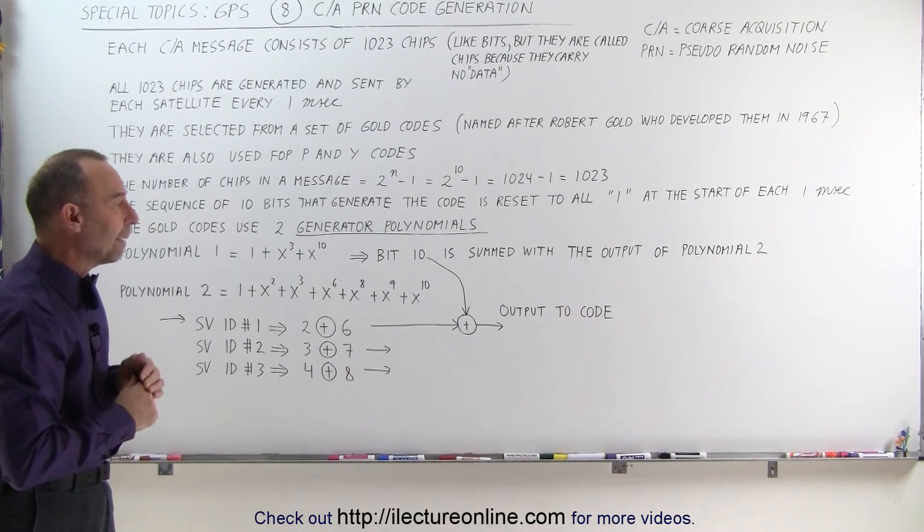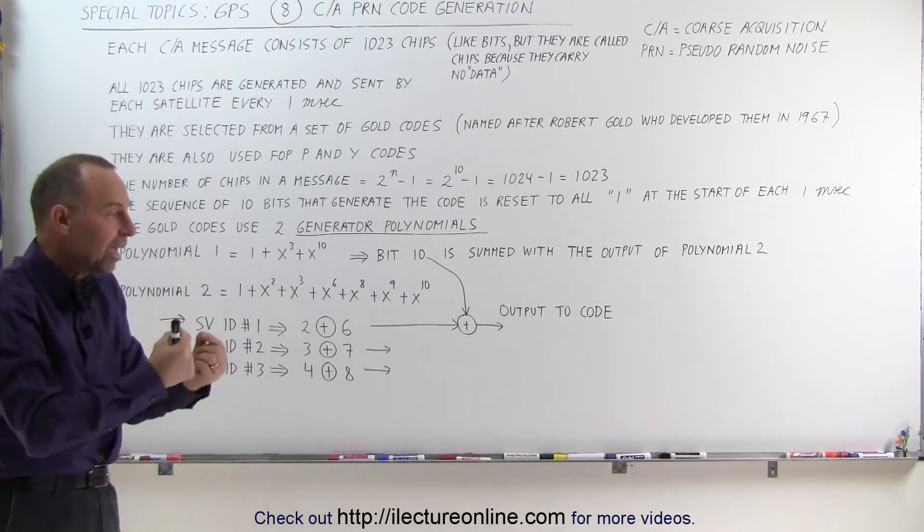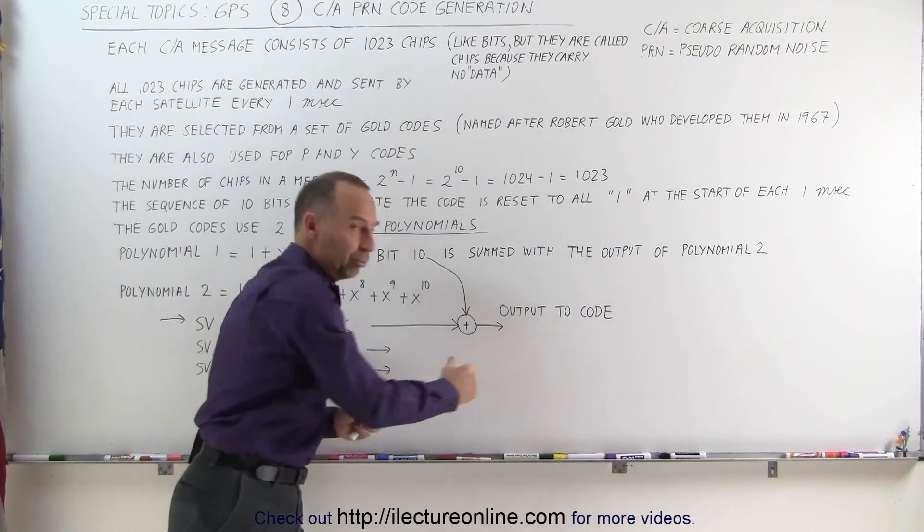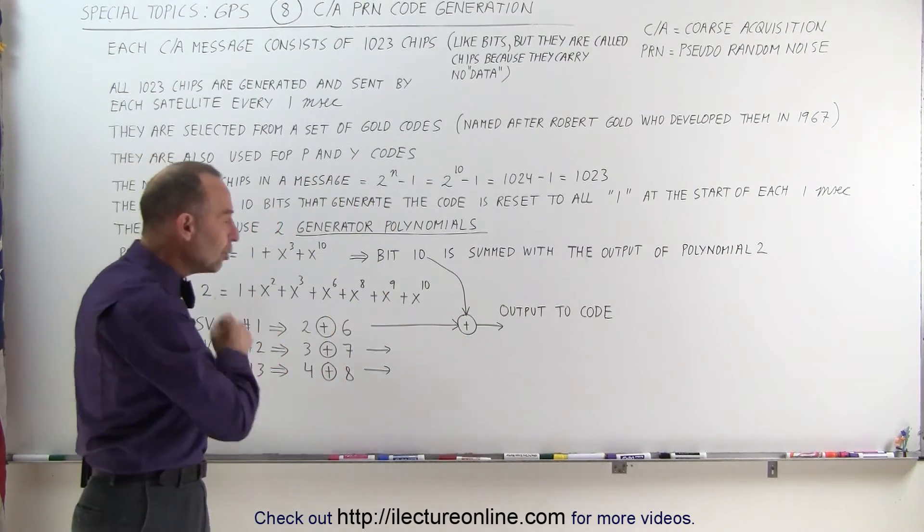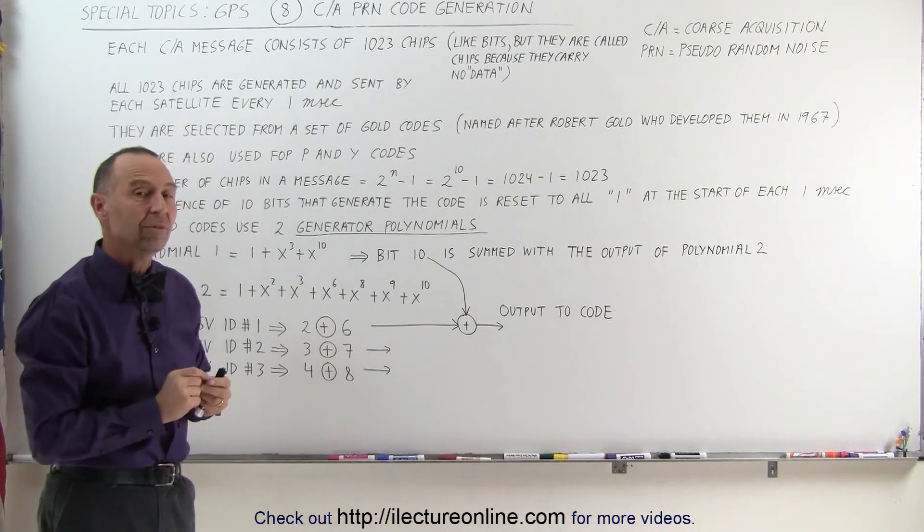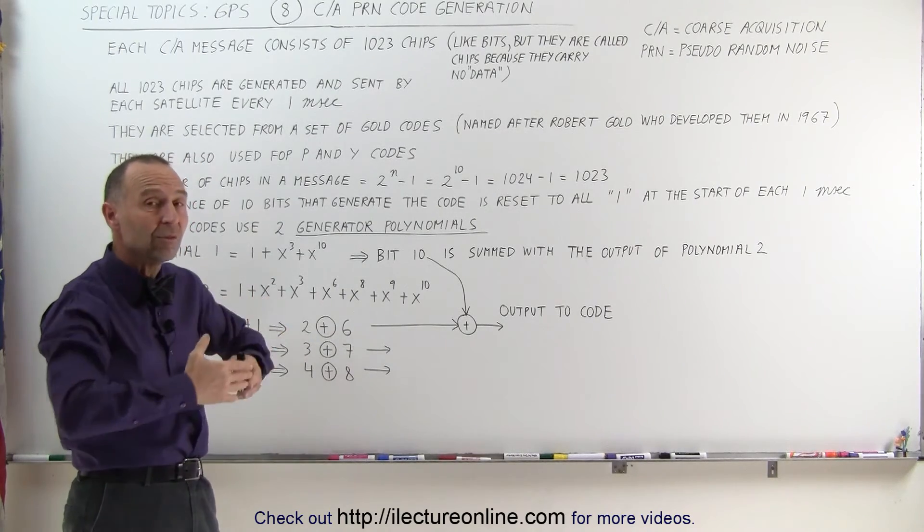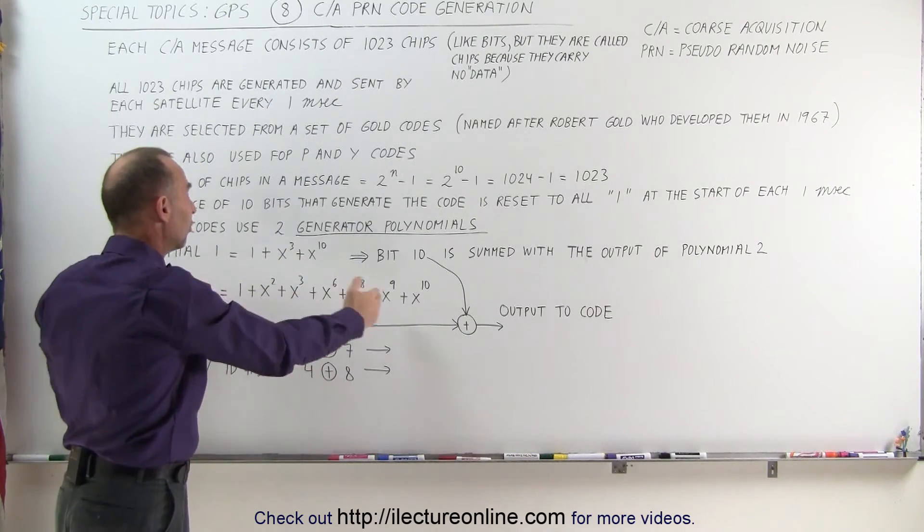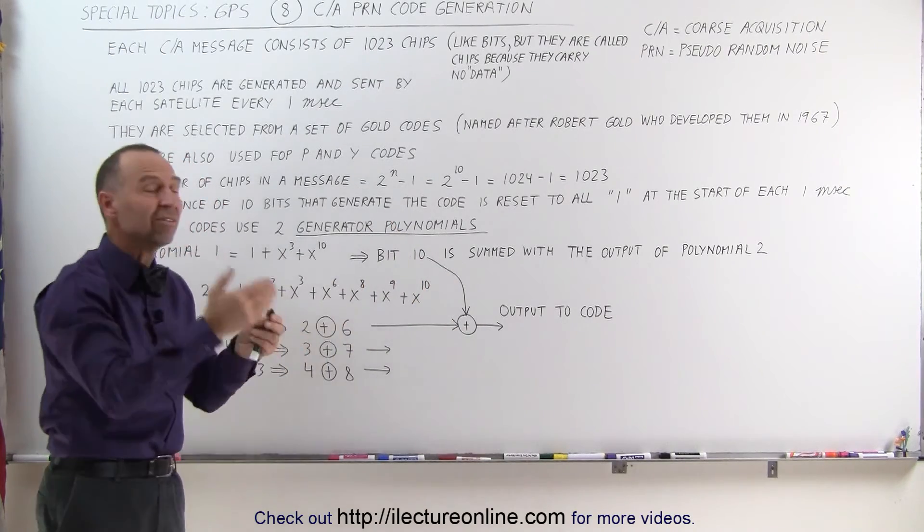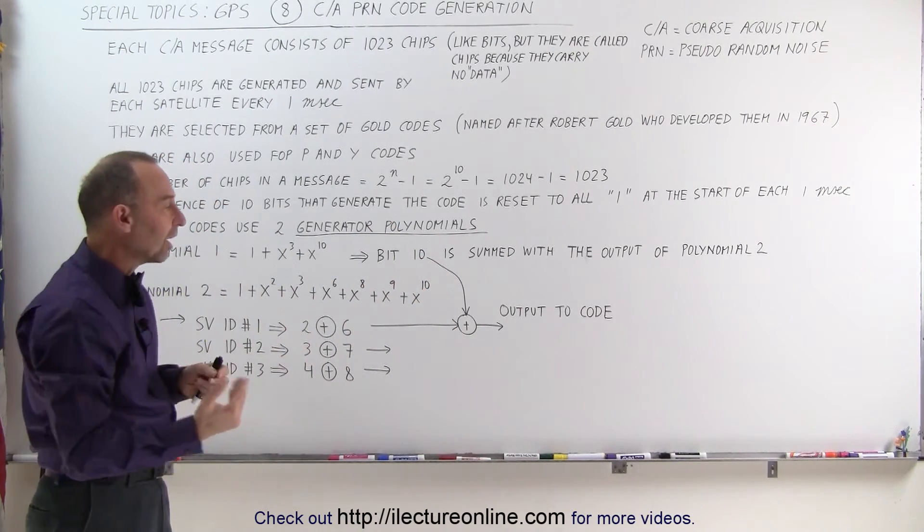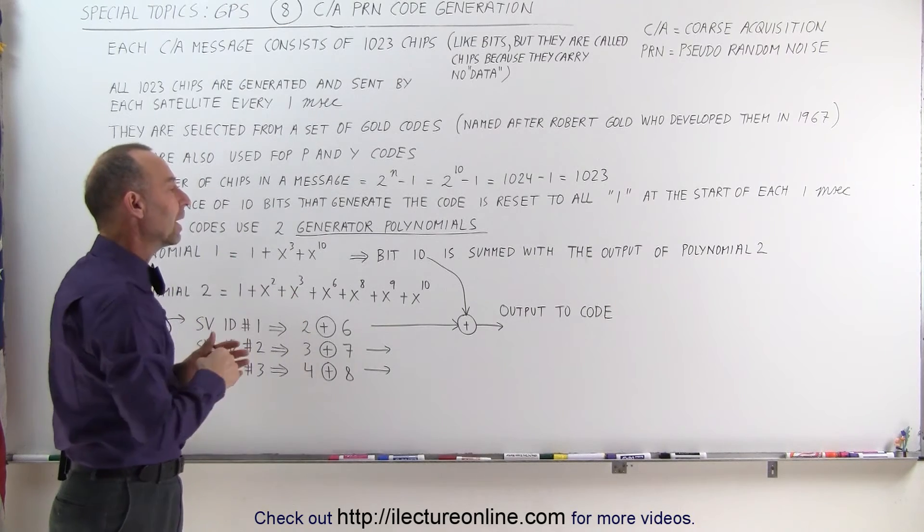Each time we go through one step, we put out one chip, one bit or one chip, and we do that 1,023 times. The 1,024 times, we reset everything back to ones, so each bit string of 10 bits will be reset to 1 at the end of 1 millisecond, and then we do the whole process over again.